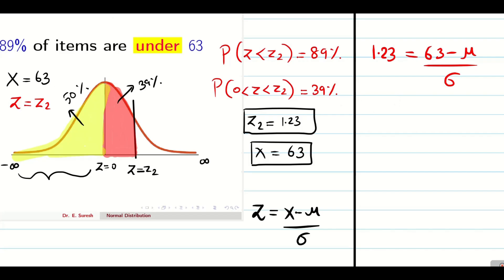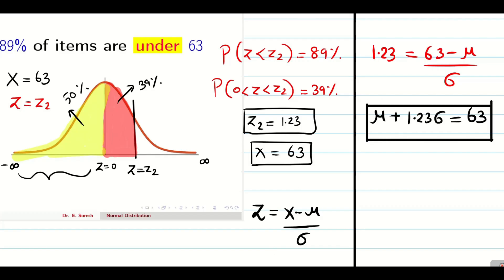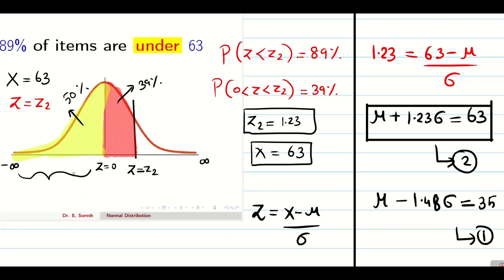Using z = (x - mu) / sigma with z2 = 1.23 and x = 63: 1.23 = (63 - mu) / sigma. This gives Equation 2: mu + 1.23·sigma = 63. Equation 1 is: mu - 1.48·sigma = 35. Solving both equations gives mu = 50.33 and sigma = 10.3. If variance is asked, take the square of sigma.